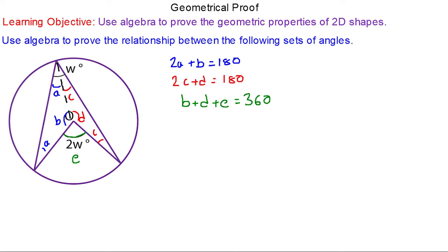Now we can use the blue equation to make b the subject. So b will equal 180 minus 2a. We can write this in the green equation. For d we can make d the subject of the red equation. So d will equal 180 minus 2c. And we add that to b.